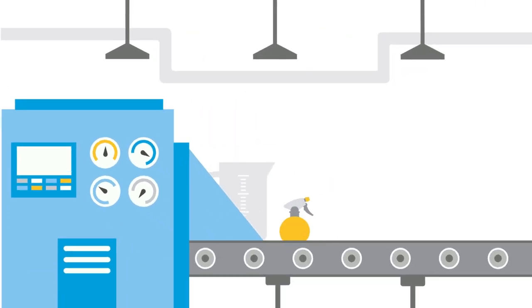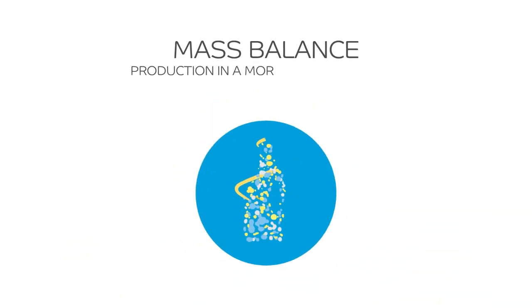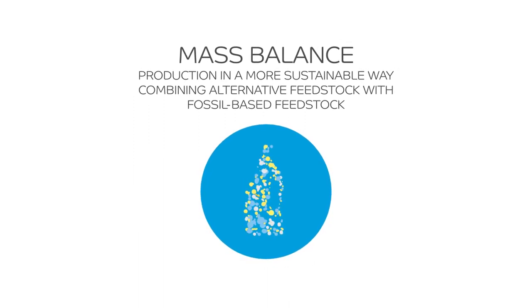Mass balance enables the production of similar polymers in a more sustainable way by combining alternative feedstock with fossil-based feedstock in our crackers.